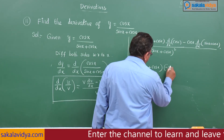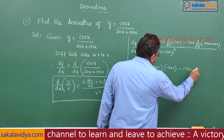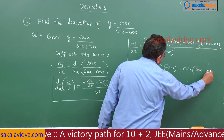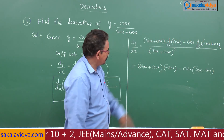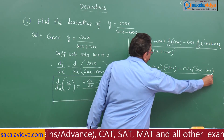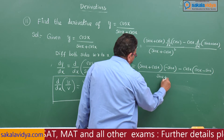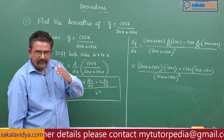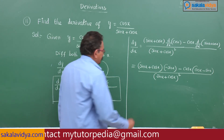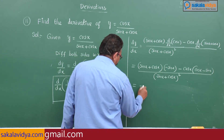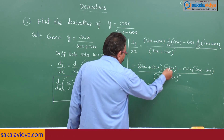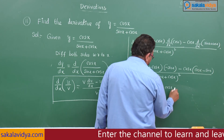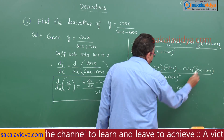After writing the respective differential coefficients: derivative of cos x is minus sin x. So this equals sin x plus cos x into minus sin x, minus cos x into the derivative of sin x plus cos x, all over sin x plus cos x whole square. Expanding: minus sin squared x minus sin x cos x minus cos squared x minus cos x into cos x.